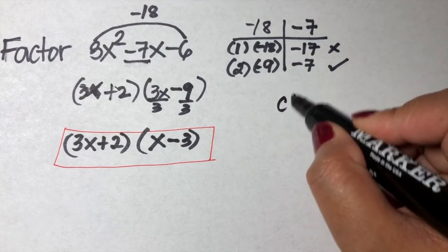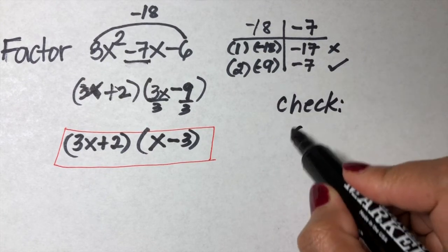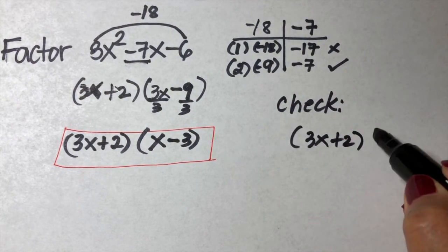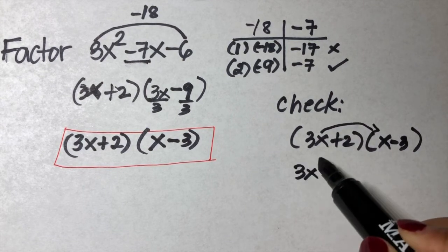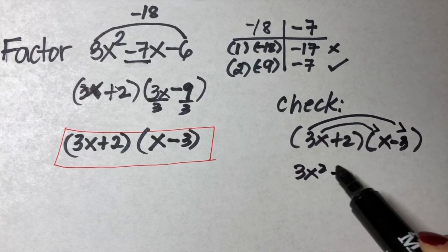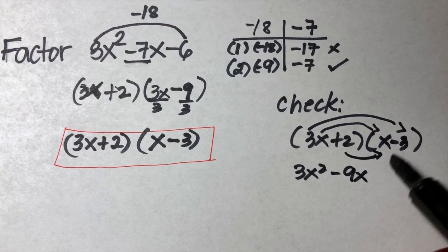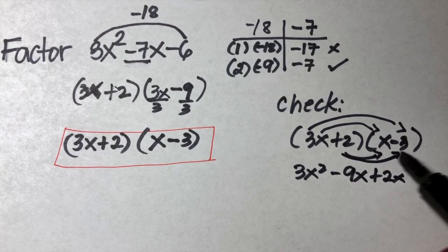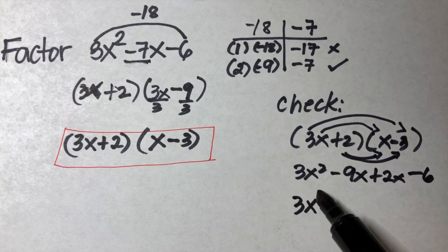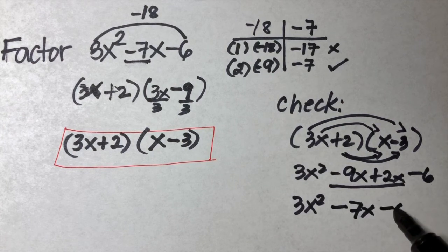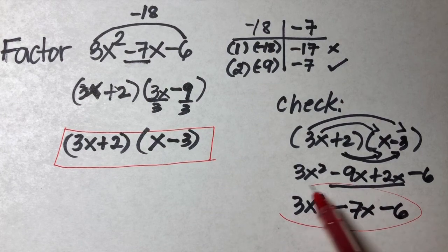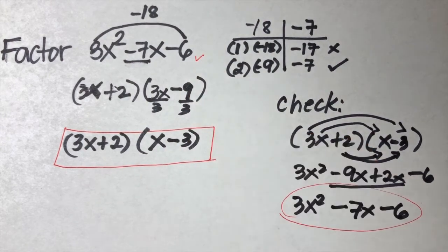Let us check to make sure. Multiply 3x plus 2 times x minus 3. 3x times x is 3x squared. 3x times negative 3 is negative 9x. Positive 2 times x is positive 2x, and 2 times negative 3 is negative 6. Combining like terms gives negative 7x, and bring down negative 6. The product of our factors is the same as the original problem, so this is correct.